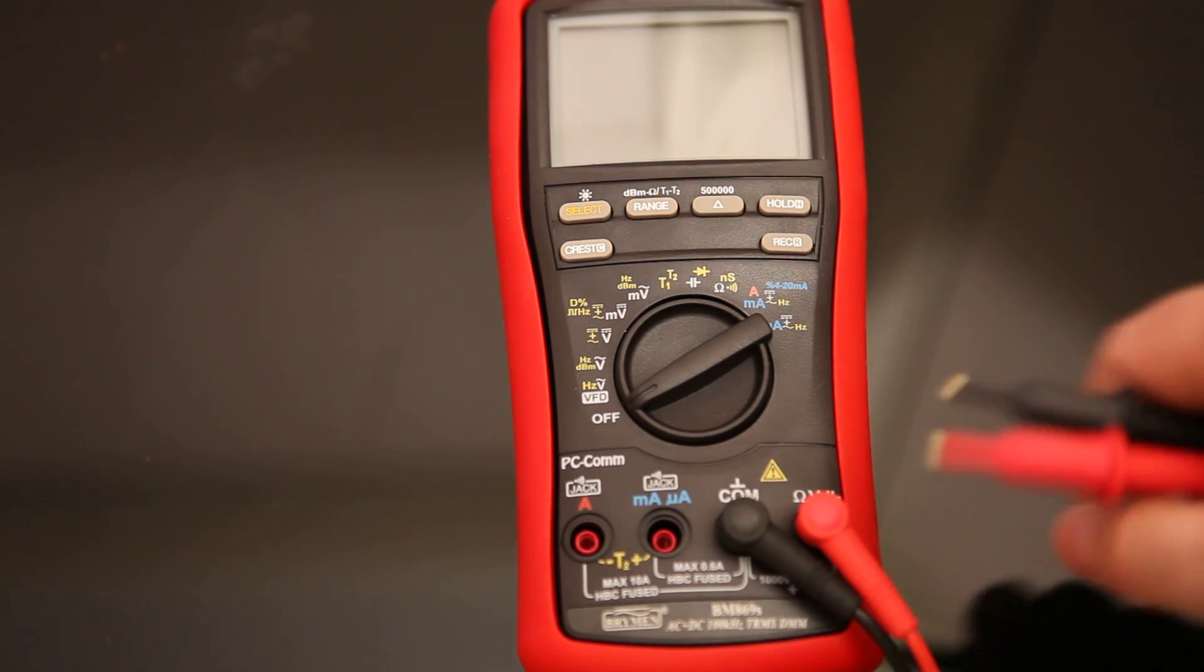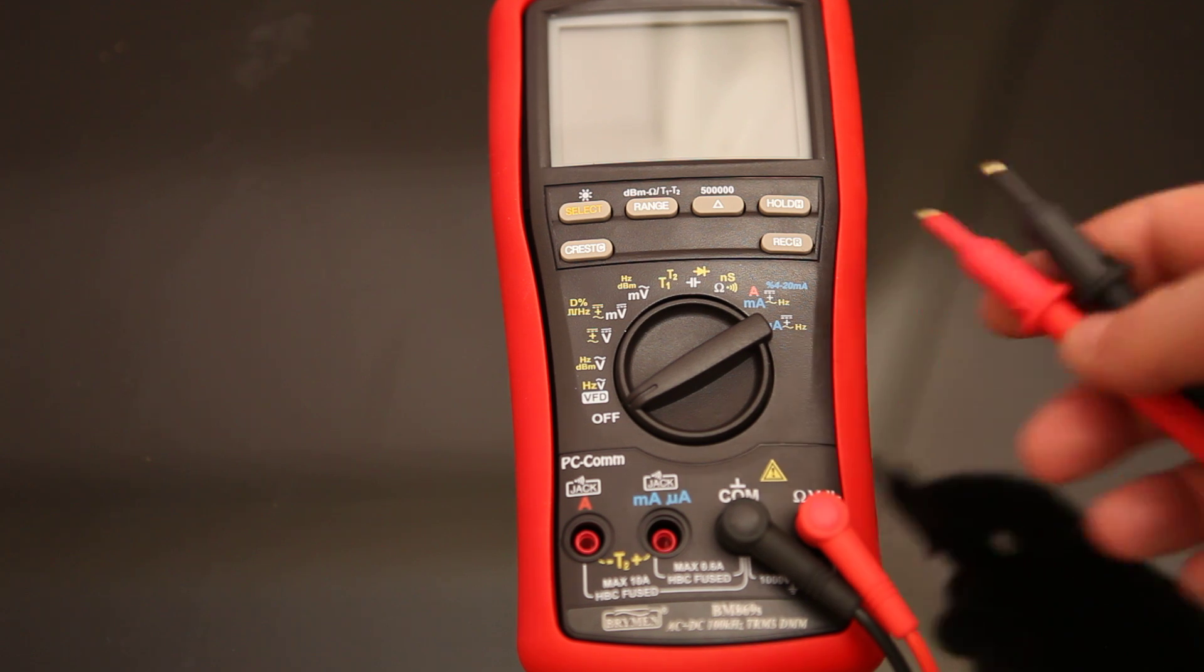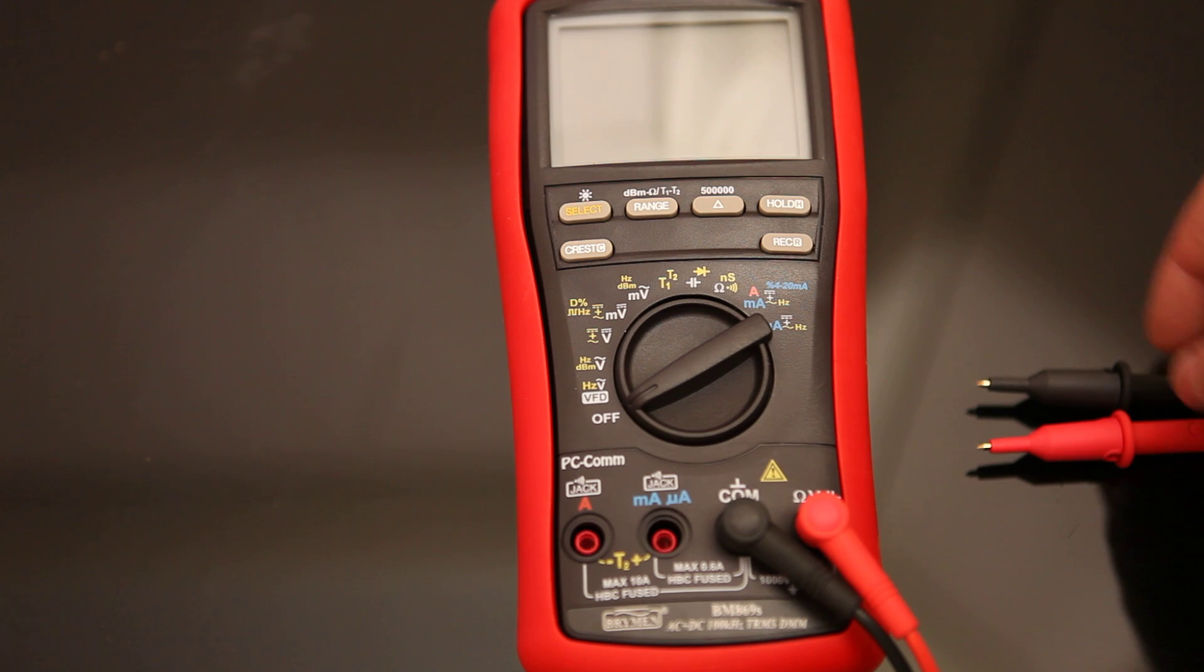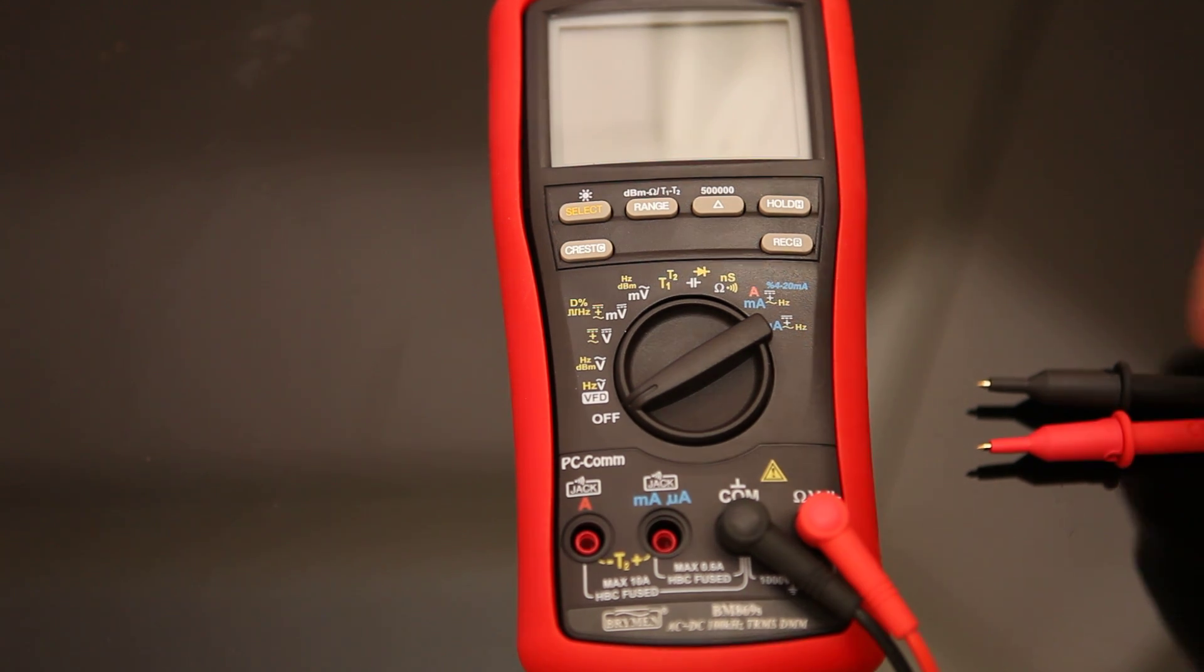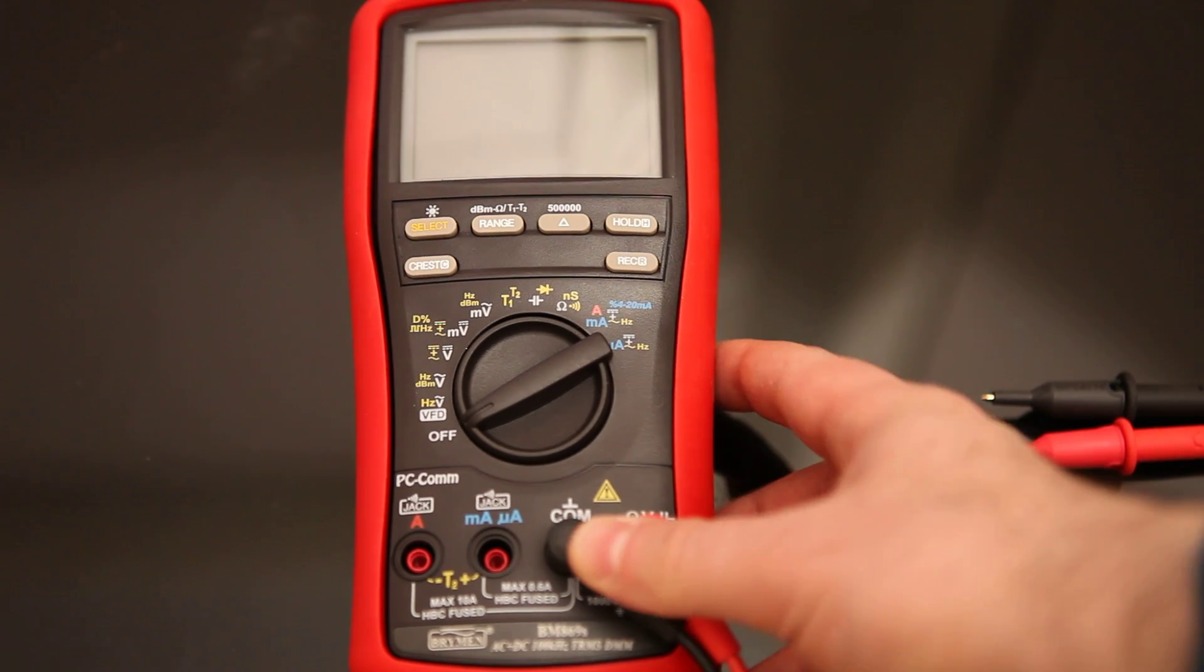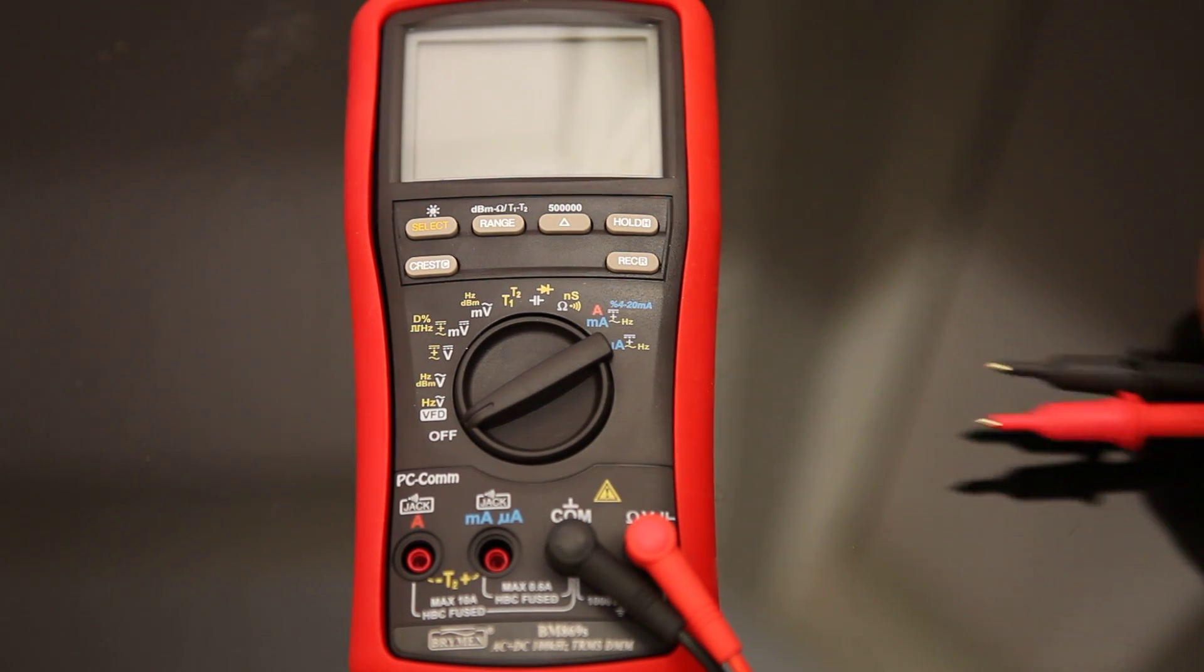So this is a Bryman 869 multimeter. It's to replace the old precision gold thing I've had for 20 years, which has rather seen better days, although it does still work in some ranges, and I thought I might as well get this. It's a little bit overkill.